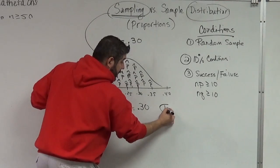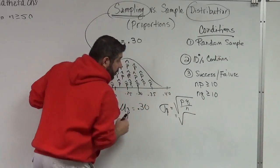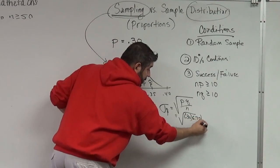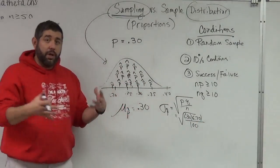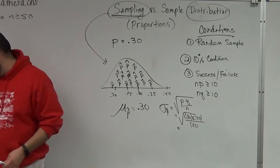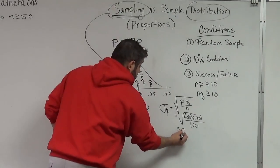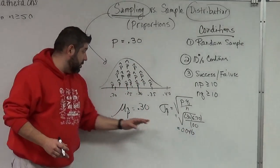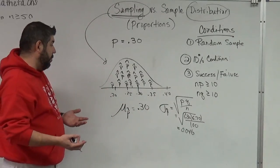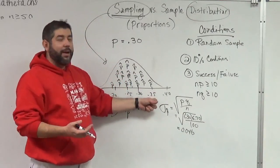The mean of this sampling distribution is equal to P. The standard deviation of P-hat is the square root of PQ over N. In this case, I've got the square root of P (which was 0.3) times Q (which is 0.7), divided by N (which was 100 in each of my samples). I calculate that out and get a standard deviation of approximately 0.046.